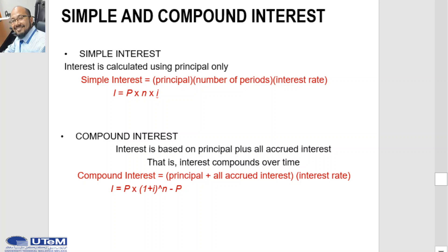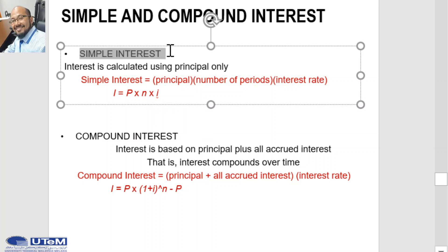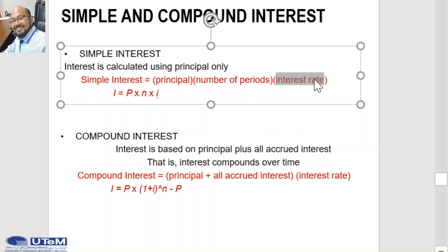Simple interest is calculated using the principal only, ignoring any interest accrued in preceding interest periods. The total simple interest over several periods is computed as principal times the number of periods times the interest rate, where the interest rate is expressed in decimal form. For example, if the interest rate is 10%, then I is 0.10; if 5%, then I is 0.05.